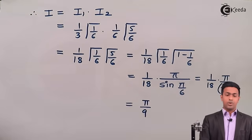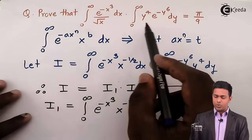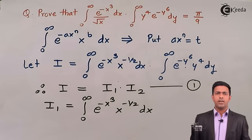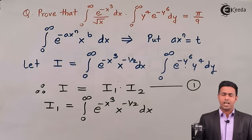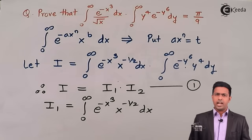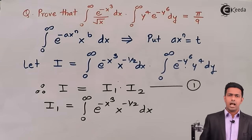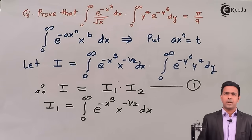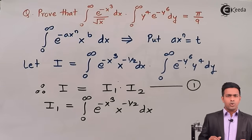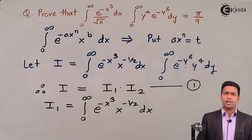We have proved that the product of the two given integrals equals π/9 using the definition and reflection property of the gamma function. If you want to learn more concepts and numericals about engineering mathematics, visit ekida.com where you will find all the videos. You can also follow them on Facebook and Twitter. Thank you very much.